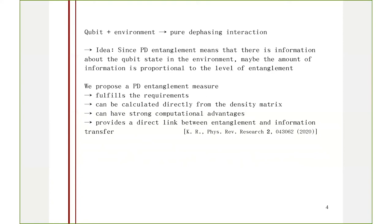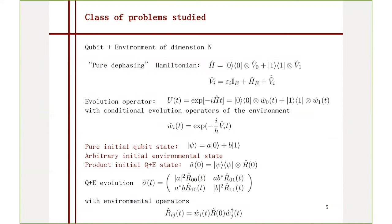It turns out that this characteristic — for pure dephasing — link between the amount of information about the qubit which is in the environment, to the amount of qubit-environment entanglement, translates directly from pure states to mixed states, even though the link between entanglement and decoherence does not. So this is the important bit: the class of problem studied, because this measure is only going to work when our density matrix looks like this.